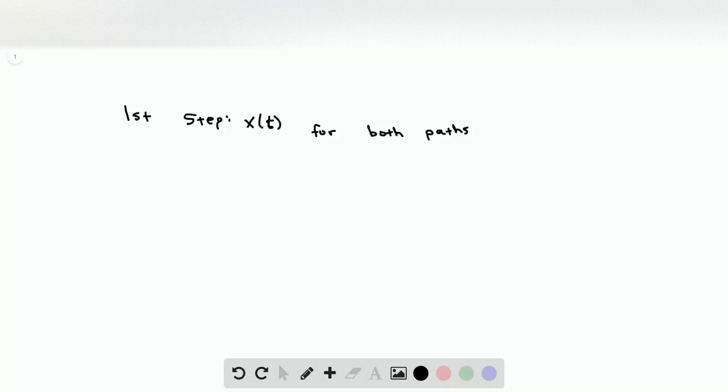The first step of this problem is to find the x of t for both paths. And by paths, I mean the first path being a positive slope for the velocity, and the second path being a sharp negative slope for velocity.